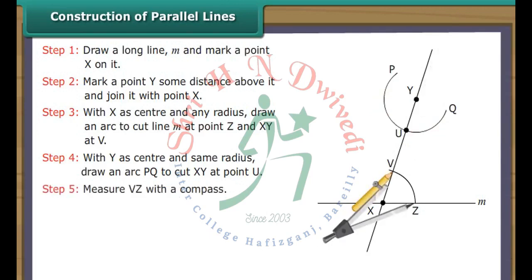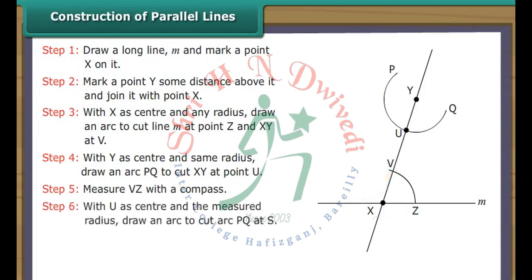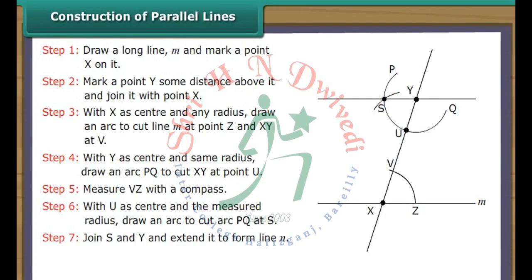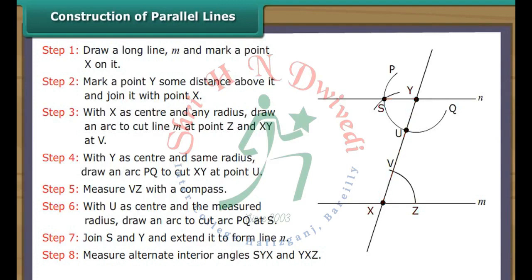Measure VZ with a compass. With U as center and the measured radius, draw an arc to cut arc PQ at S. Join S and Y and extend it to form line N. Angle SYX is equal to angle YXZ. Therefore, N is parallel to M.